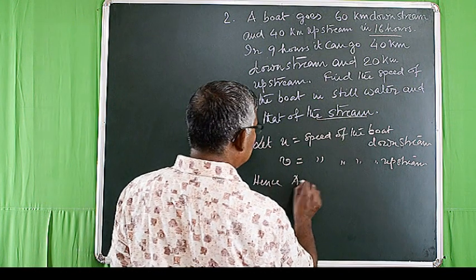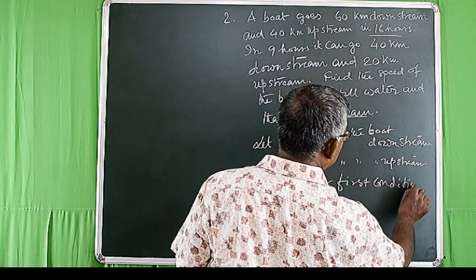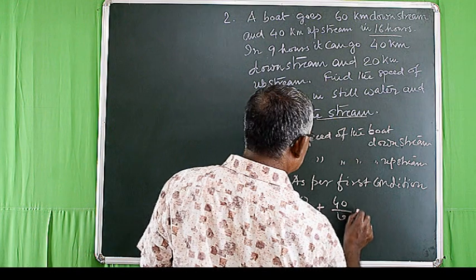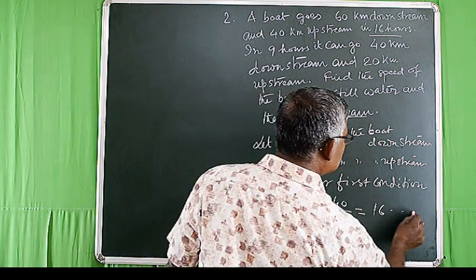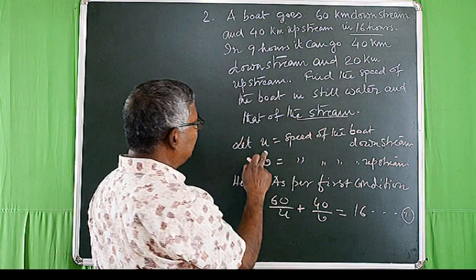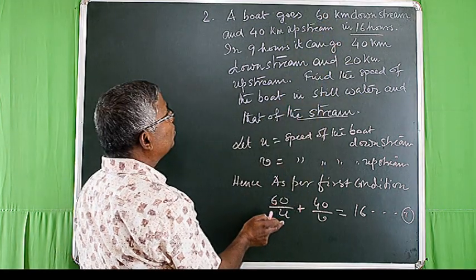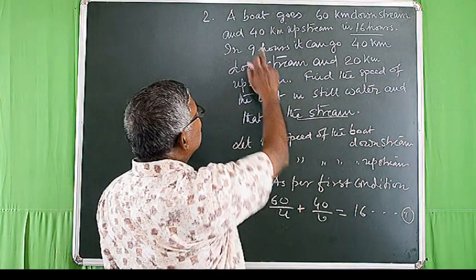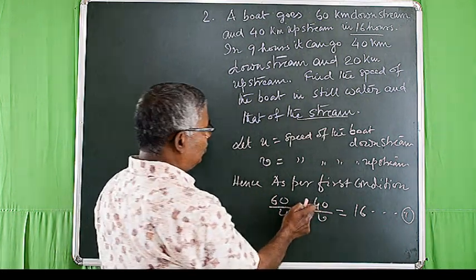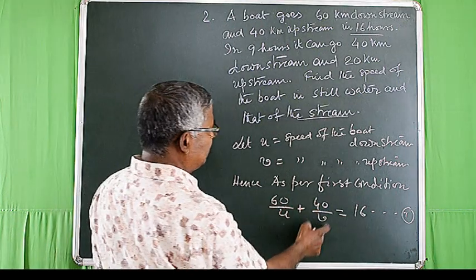As per the first condition: 60/u + 40/v = 16, suppose it is equation number 1. The boat goes 60 km downstream at speed u km/h, so time taken = 60/u. Time taken to go 40 km upstream at speed v km/h = 40/v. Total time = 16 hours, therefore 60/u + 40/v = 16.